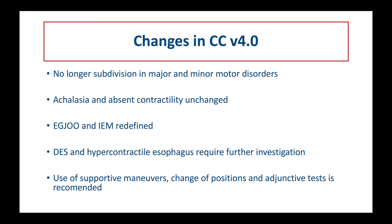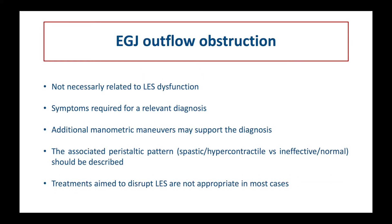For the diagnosis of distal esophageal spasm and hypercontractile esophagus, further investigations are required. For the diagnosis of AGEJ outflow obstruction, symptoms of esophageal dysfunction such as dysphagia and non-cardiac chest pain are required, as well as supportive evidence of obstruction at timed barium esophagogram or at FLIP evaluation. Otherwise, AGEJ outflow obstruction should always be considered inconclusive.